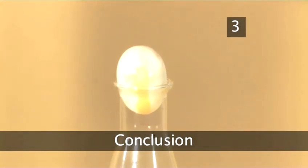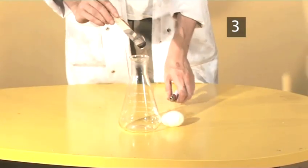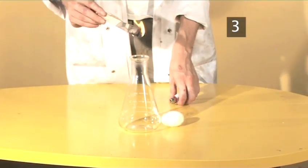Step 3. Conclusion. Why did this happen? The air in the atmosphere exerts atmospheric pressure. When the paper was lit, the air inside the bottle got hotter and expanded. Some of the air escaped from the bottle.